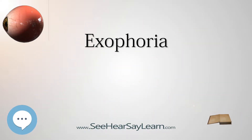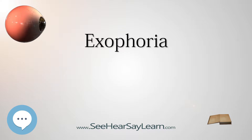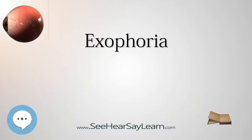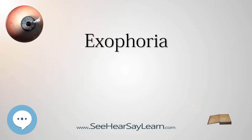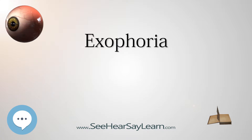Exophoria is a form of heterophoria in which there is a tendency of the eyes to deviate outward. During examination, when the eyes are dissociated, the visual axes will appear to diverge away from one another. The axis deviation in exophoria is usually mild compared with that of exotropia.